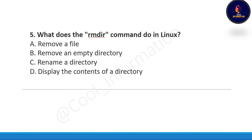Next question: what does the rmdir command do in Linux? Option A: remove a file, Option B: remove an empty directory, Option C: rename a directory, Option D: display the contents of the directory. The correct option is B — remove an empty directory.